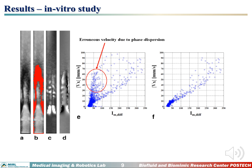To remove the phase dispersion region during multi-VENC overlapping, we created a mask image from the magnitude image and filtered out erroneous velocity due to phase dispersion.